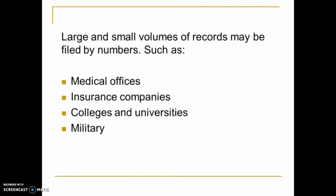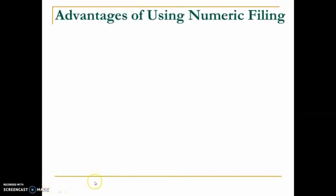Several types of large or small volume record systems use numbers as a filing arrangement — for example, medical offices like hospitals and clinics, insurance companies that keep records according to insured numbers, colleges and universities, and the military system, which uses numbers to identify each of their staff.